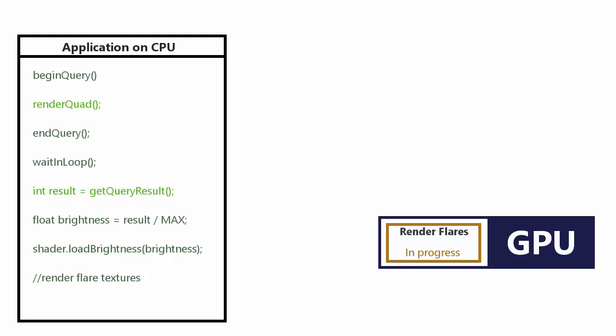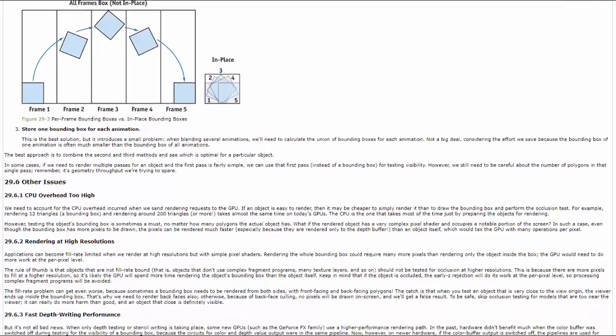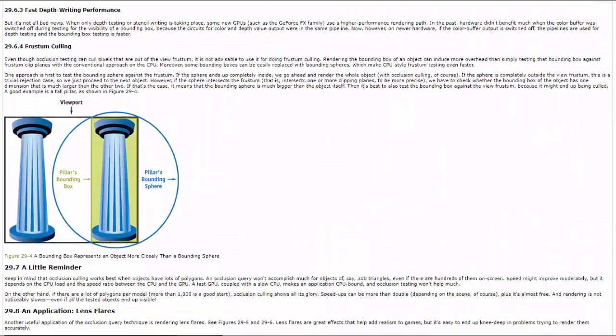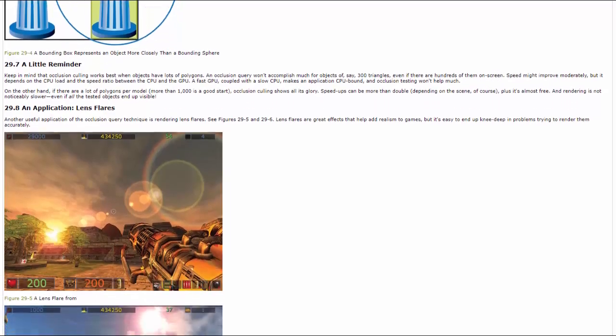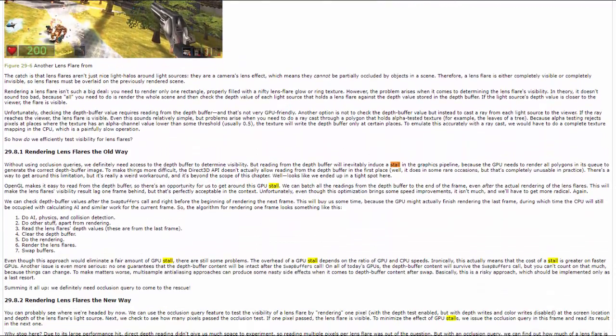If we don't require the result right away, we can avoid stalling the GPU and CPU by simply collecting the results a frame or so later when it's available — and that's what we're going to do in this tutorial. If you'd like to read more about the problems with querying the GPU and the stalling it can cause, there's a link to a very interesting article in the description of this video.